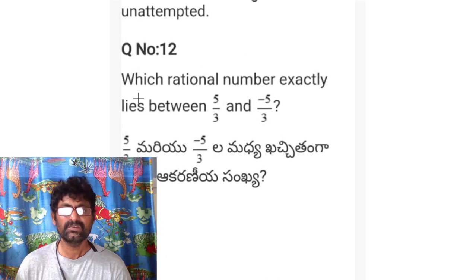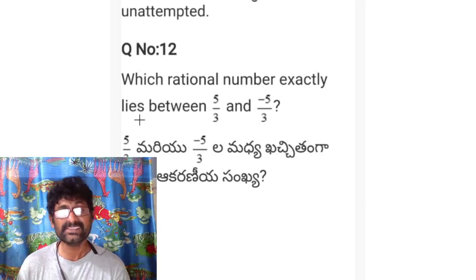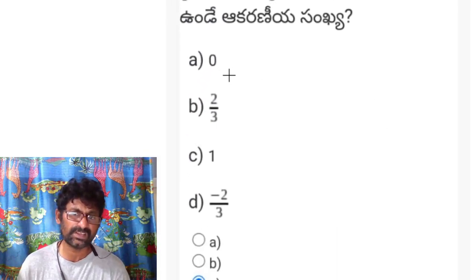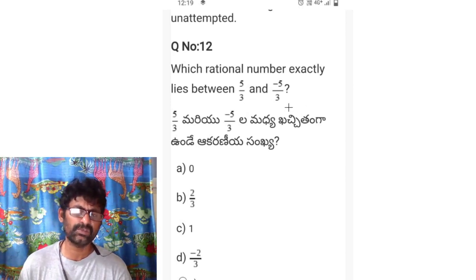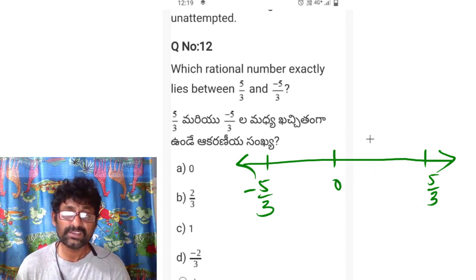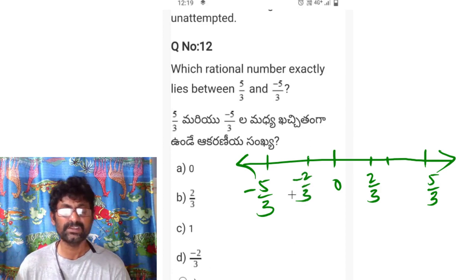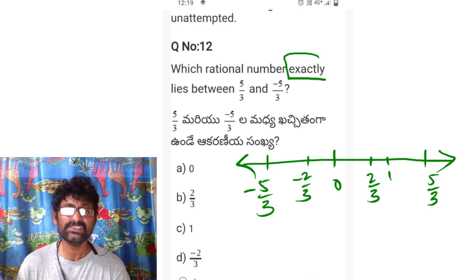Question 12: which rational number lies exactly between 5/3 and -5/3? All four options — 0, 2/3, 1, and -2/3 — lie between these two values on a number line. However, the value exactly in the middle is 0. Option A is correct.